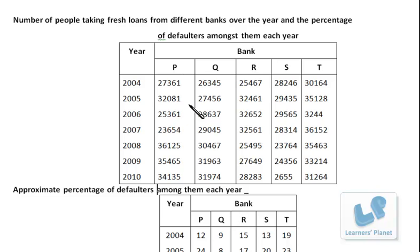So here this is one table in which banks P, Q, R, S, T in the various years, the loans were given. And in this table - this table is not complete, I have to scroll it - the percentage of defaulters are given. So let's take up a question one by one.